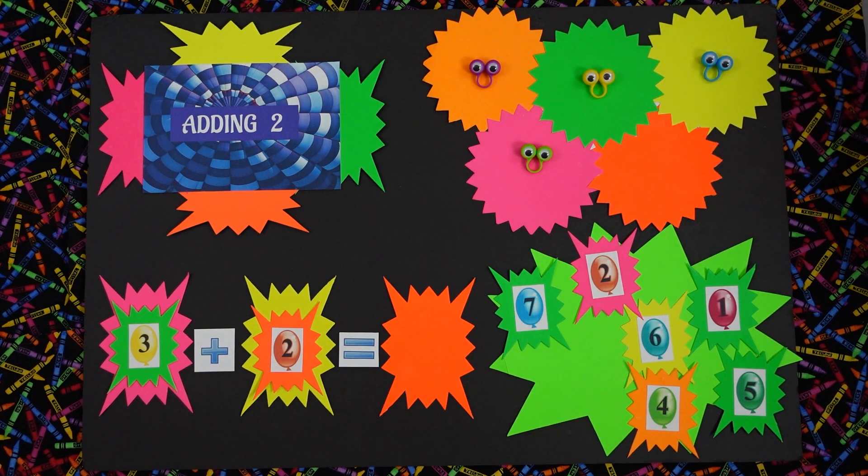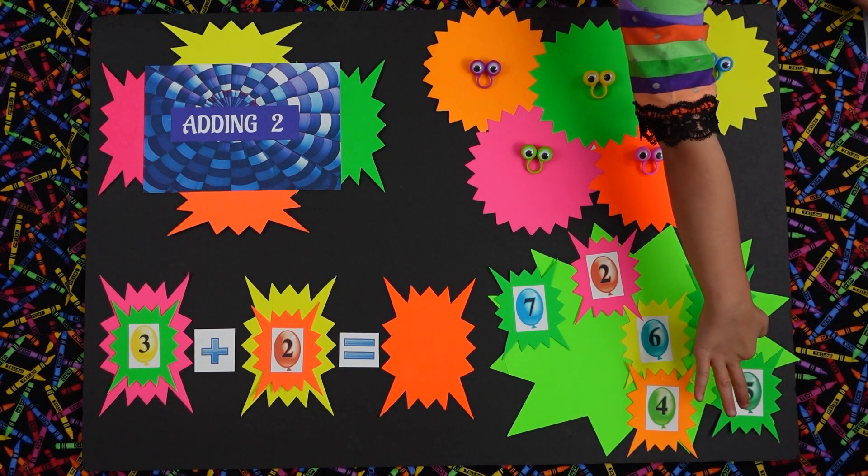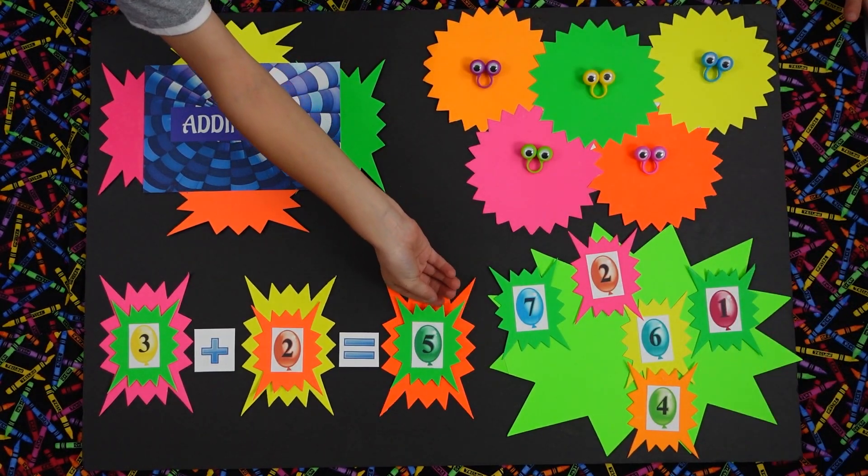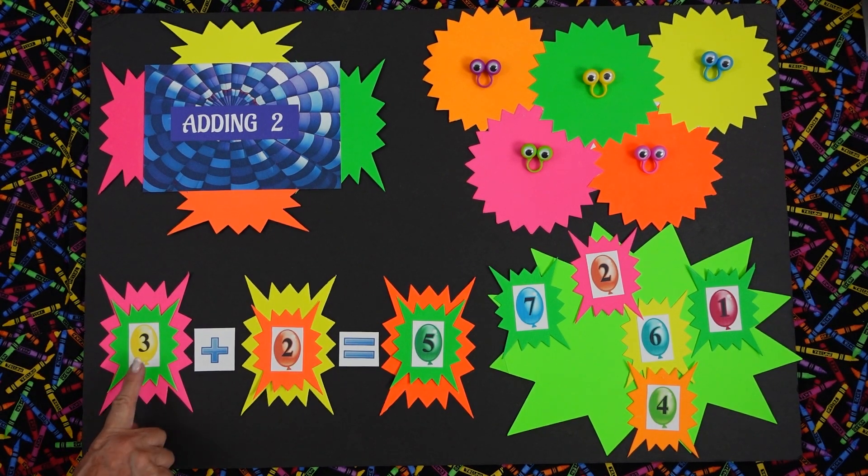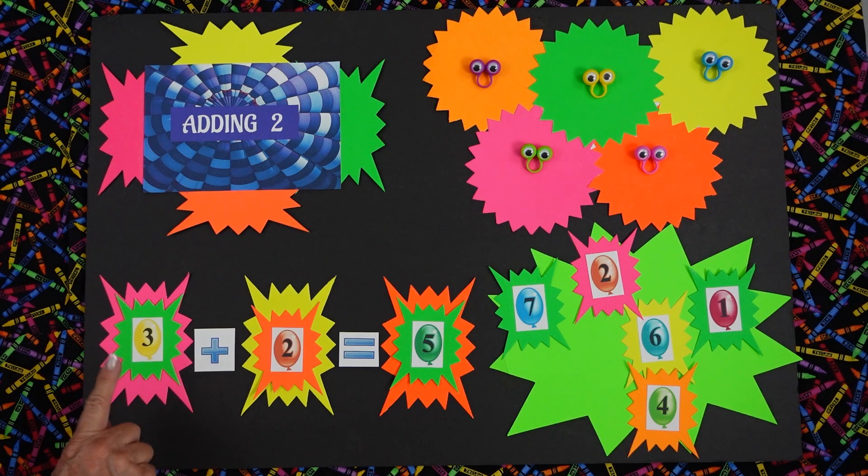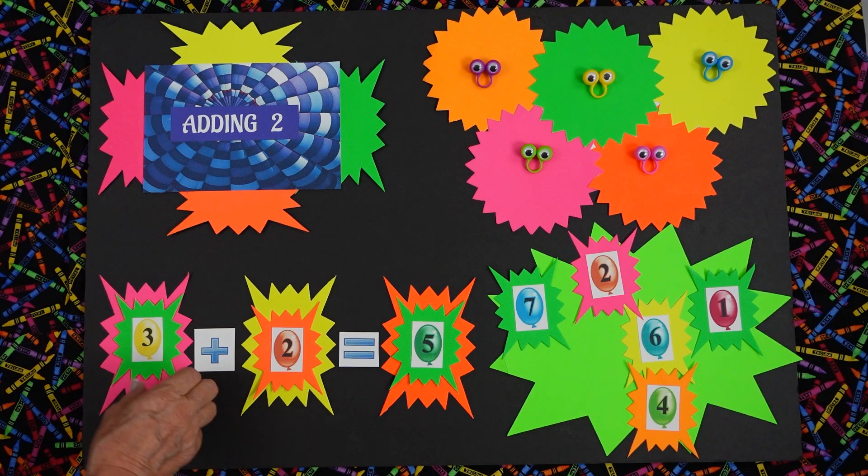Let's go one and two. Can you tell me how many we have all together? Five. You're right. You're right. Can you point to the number five for me? Good. Okay. There we go. Okay. Should we read the equation together? Ready? Three plus two equals five. Good job.